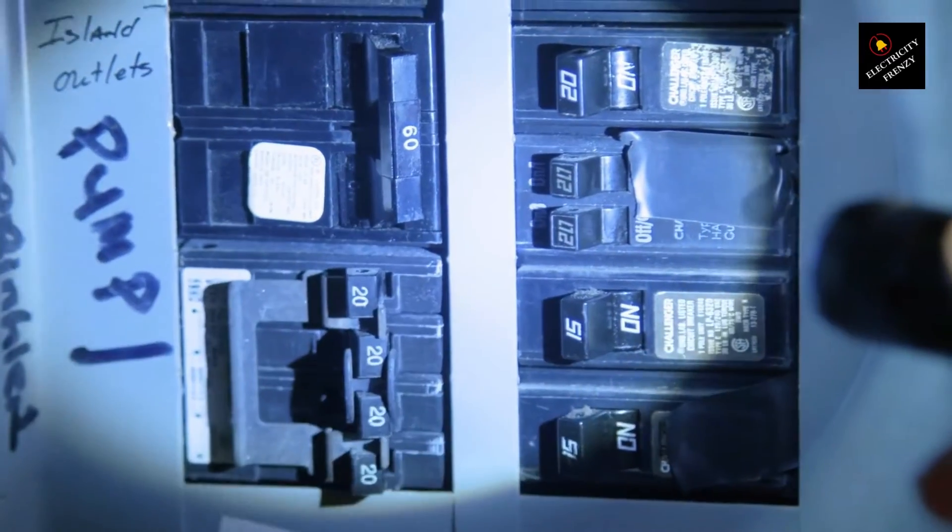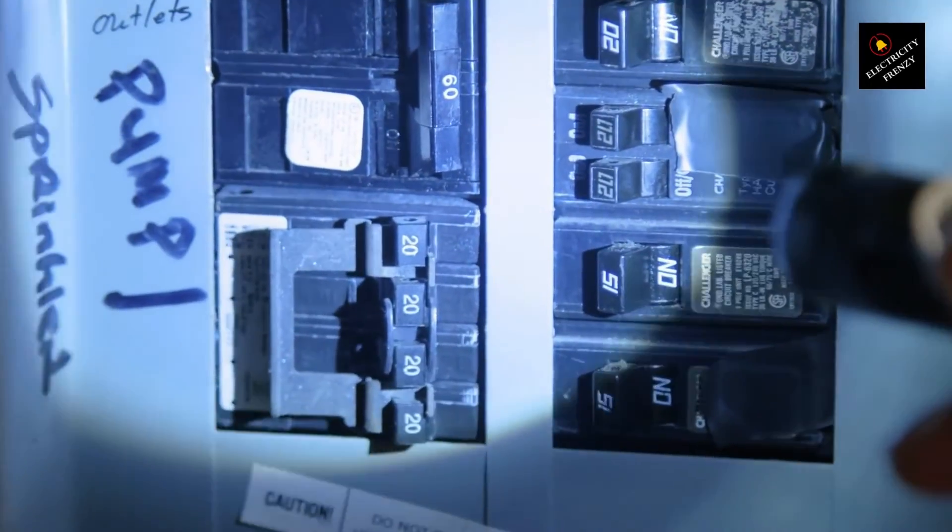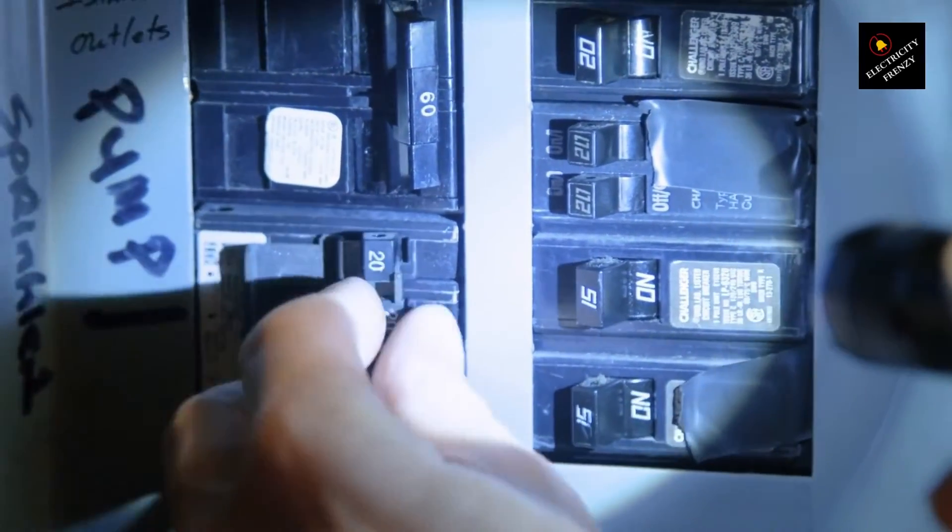Faulty wiring or loose connections: Loose electrical connections or faulty wiring in the circuit can generate resistance, resulting in heat buildup. This excess heat can trigger the circuit breaker to trip as a safety mechanism.